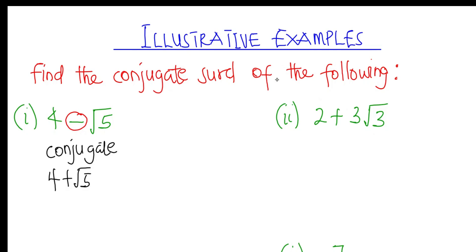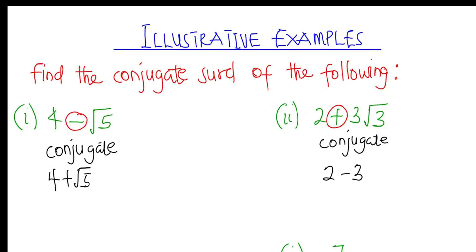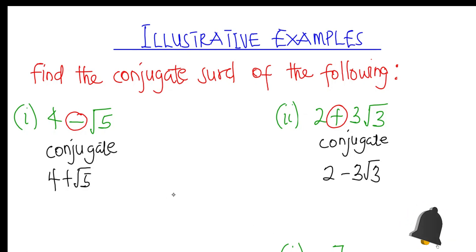Now let's try the next one: 2 + 3√3. To find the conjugate of 2 + 3√3, we change the sign in between these two terms. So the conjugate becomes 2 − 3√3. That's very practical. Now let's look at the next set of examples.